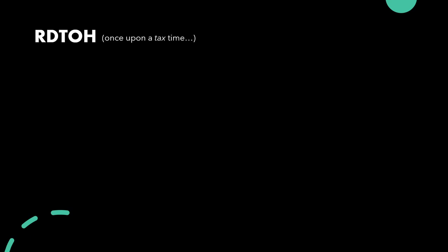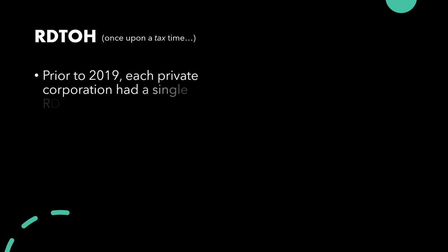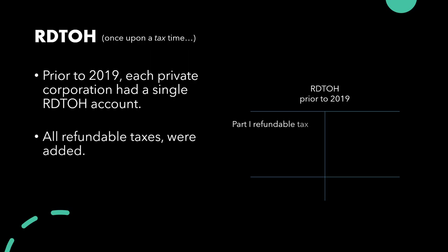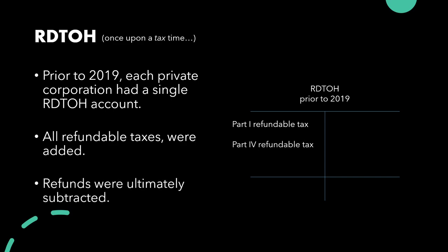We've covered this in lecture, but it's worth covering again. Prior to 2019, each private corporation had a single RDTOH account, and we could draw a T-account as follows. All refundable taxes were added to this account — this includes Part 1 refundable tax and Part 4 refundable tax. Refunds were ultimately subtracted from this account, and the ending balance would be the maximum potential refund for a CCPC in a given year.